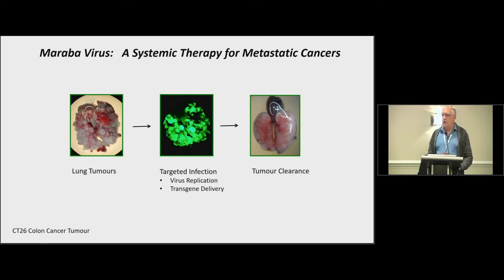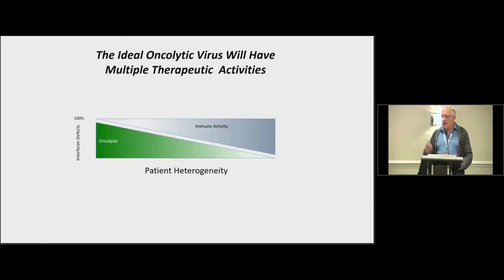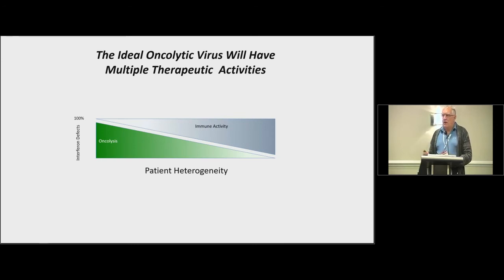This works great in CT26 colon cancer models, but not others. As Chiwai showed, there is heterogeneity amongst tumors in mice and in people — some tumors like CT26 will be extremely sensitive and very easy to treat, others will be in between, and some may be totally resistant. If you have a patient with a very defective interferon response, oncolysis may be enough to cure that patient. But in patients whose tumors are less impaired in their interferon response, you may need to do something else — generating an immune response might be the most important thing to do.